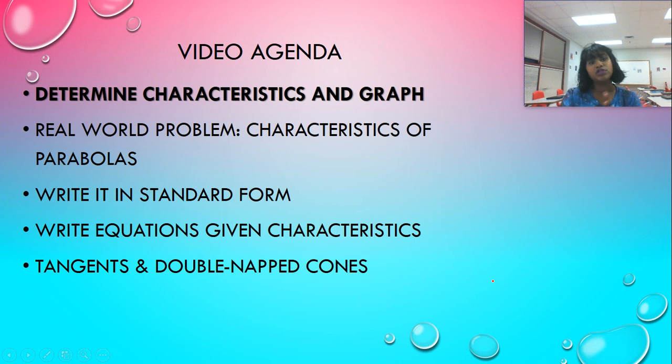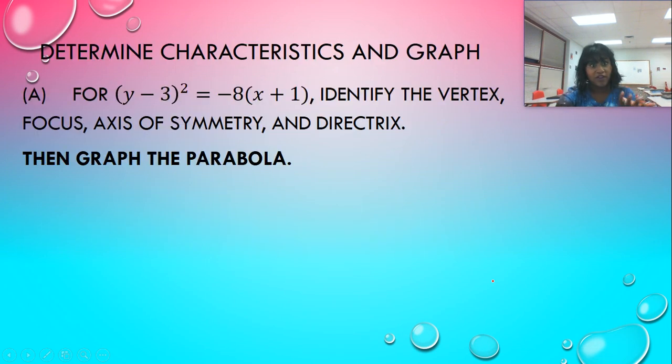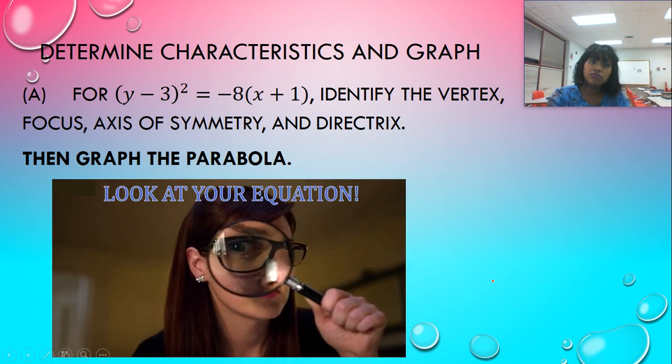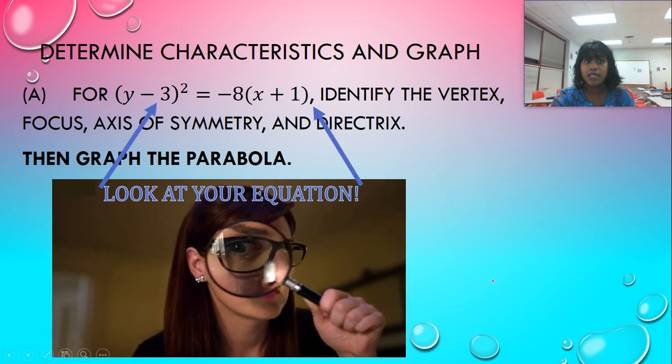So, now let's actually determine characteristics and graph. So, if I'm given this parabola, Y minus 3 squared is equal to negative 8 times X plus H, X plus 1, then go ahead and identify the vertex, focus, axis of symmetry, directrix, and then we're going to use that to graph. So, look at my equation. Very cool. There's some information that we need.